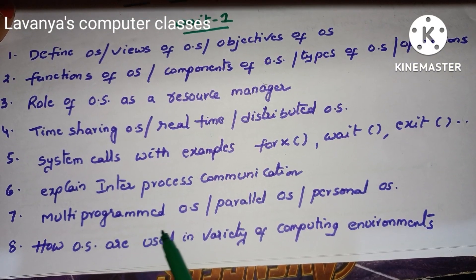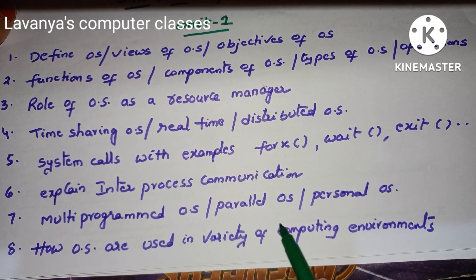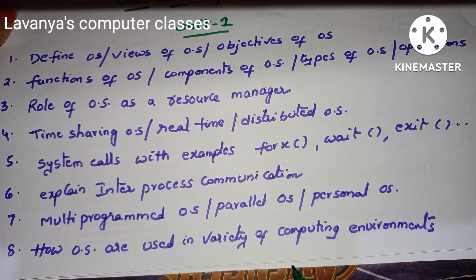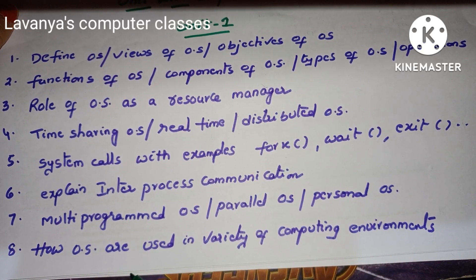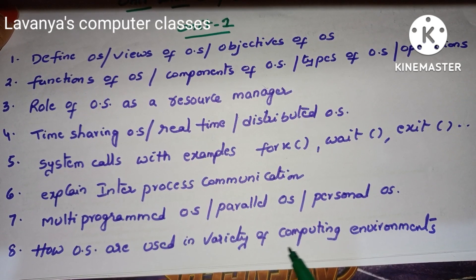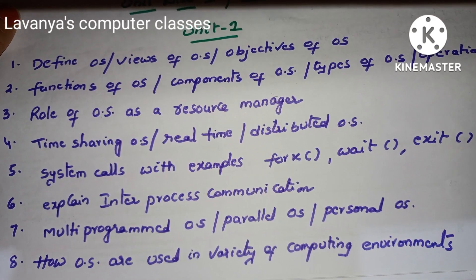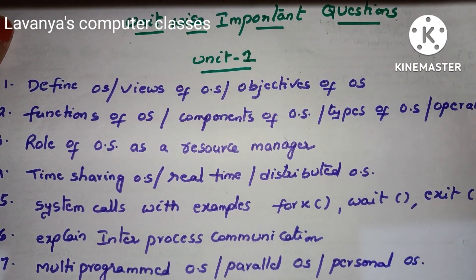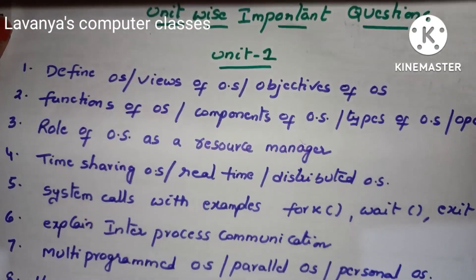Next one is what is a multi-programmed operating system, parallel operating system, or personal operating system. Next one is how OS are used in variety of computing environments. These are all the questions from unit 1 that very repeatedly came in the university papers.